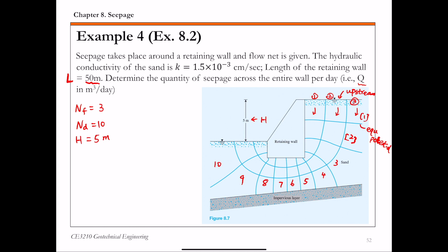To calculate the seepage quantity capital Q, first we need to determine small q, the seepage quantity per unit length of the structure. Small q uses the equation we just derived: k times H over ND times NF.